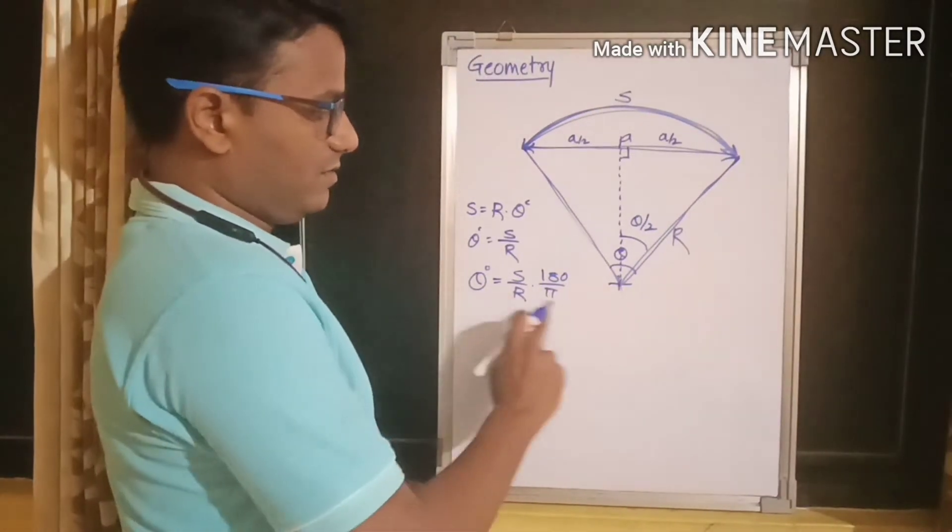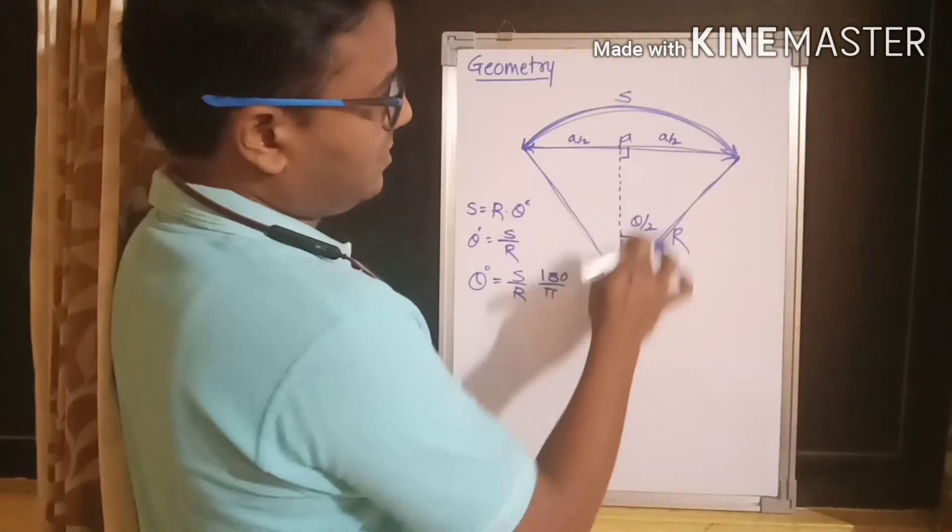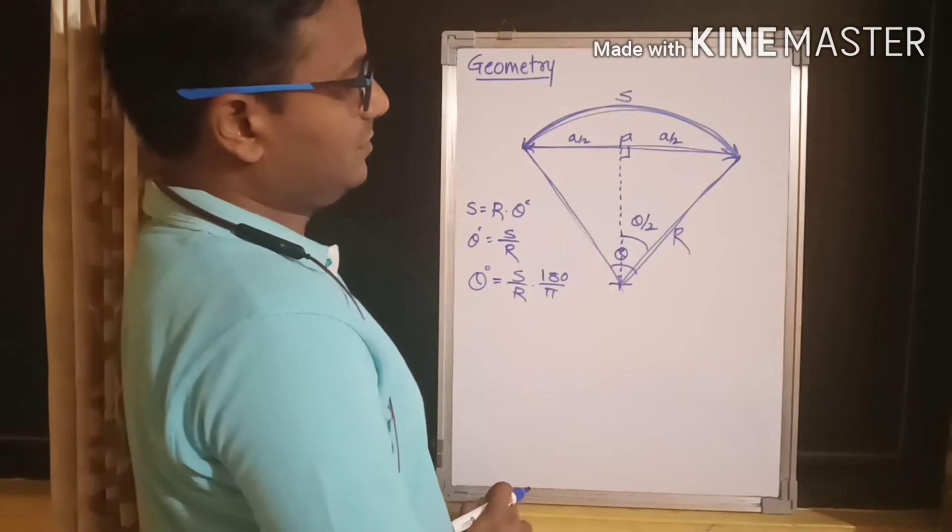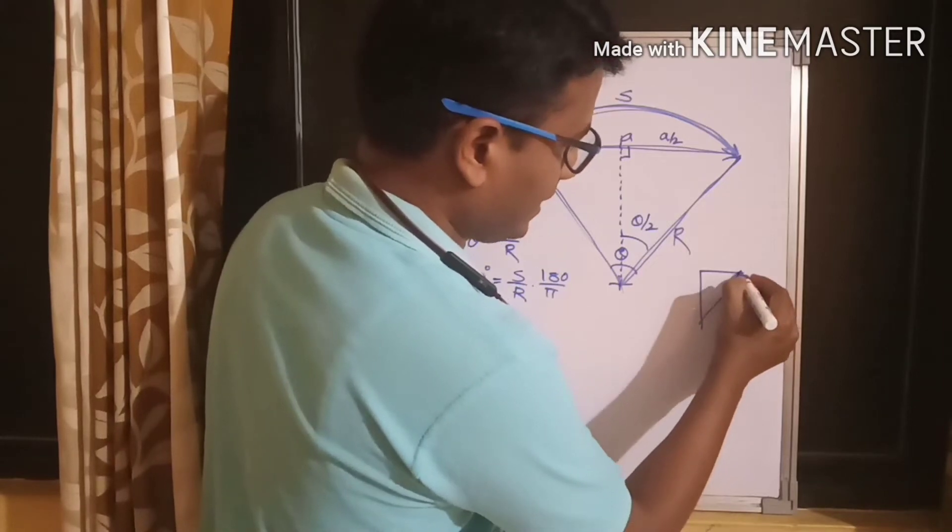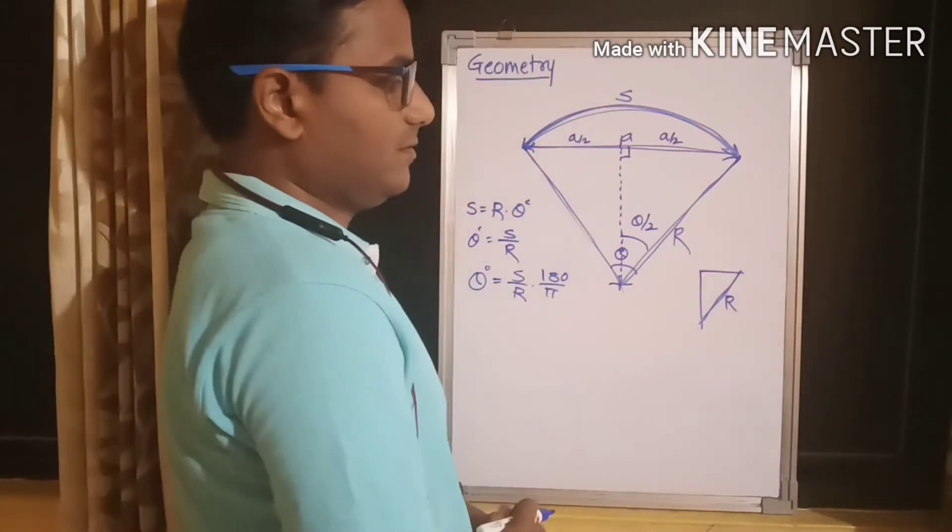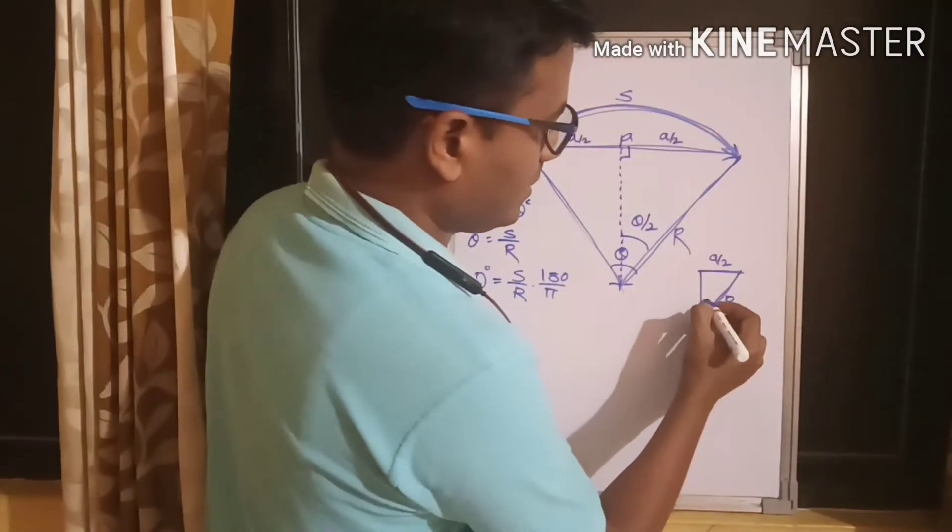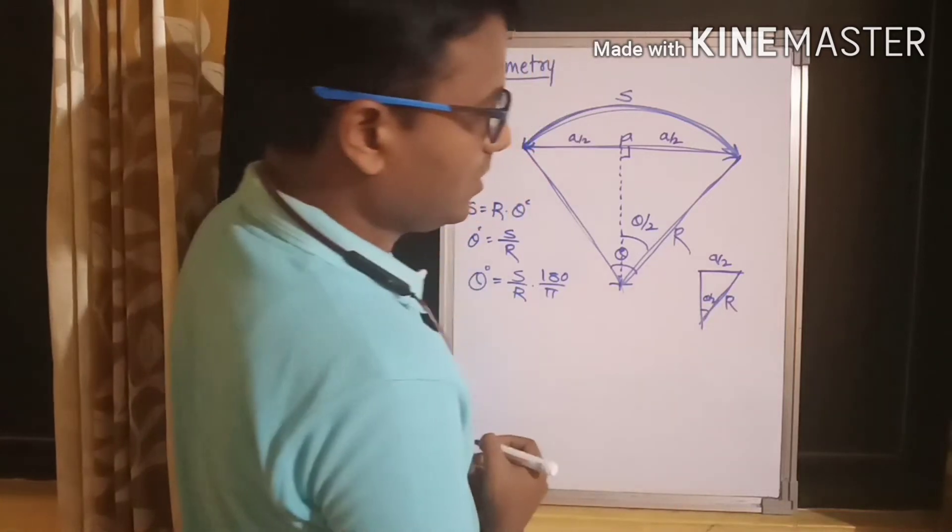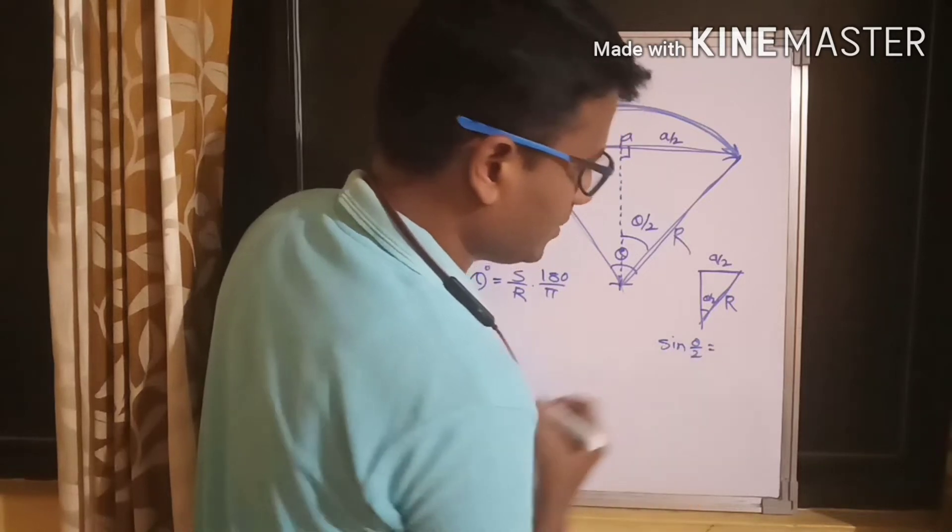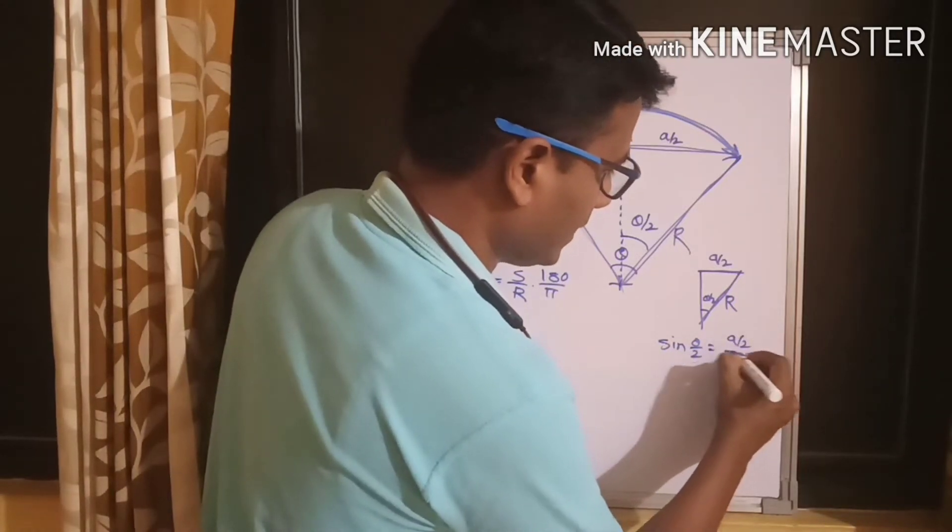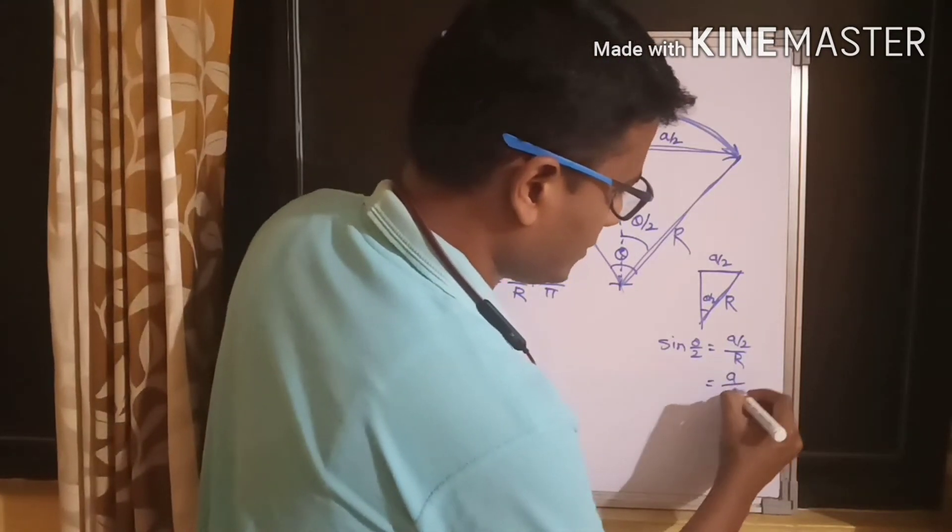Correct? Now, we have the value of theta, the included angle. Just consider this particular triangle over here. So, it is a right angle triangle having radius as its one side and one side as a by 2. And this angle is theta by 2.